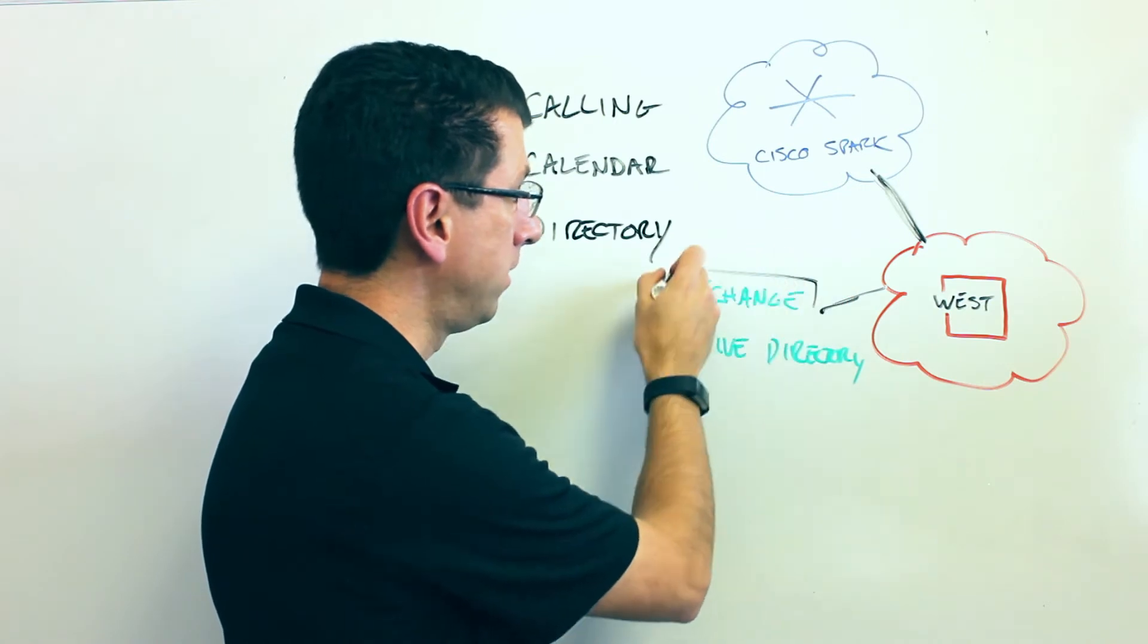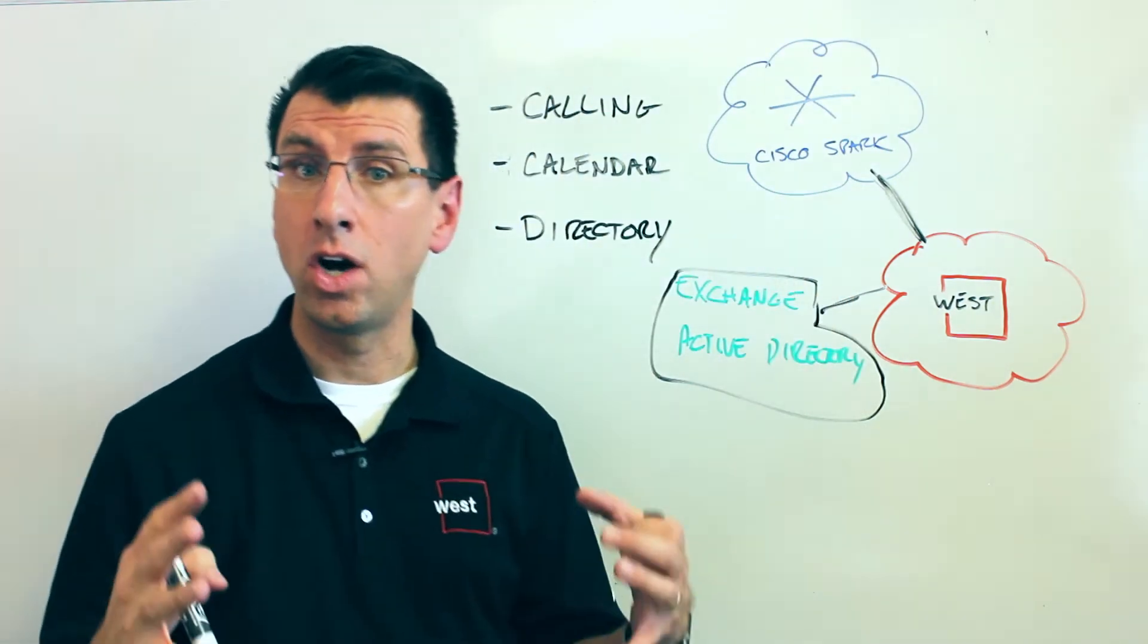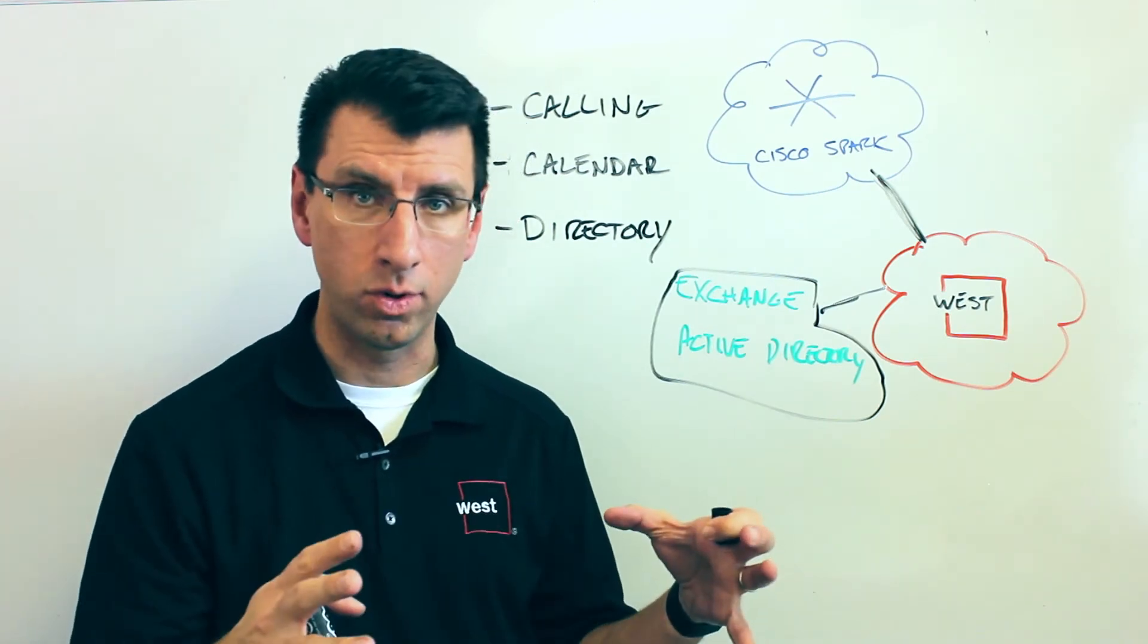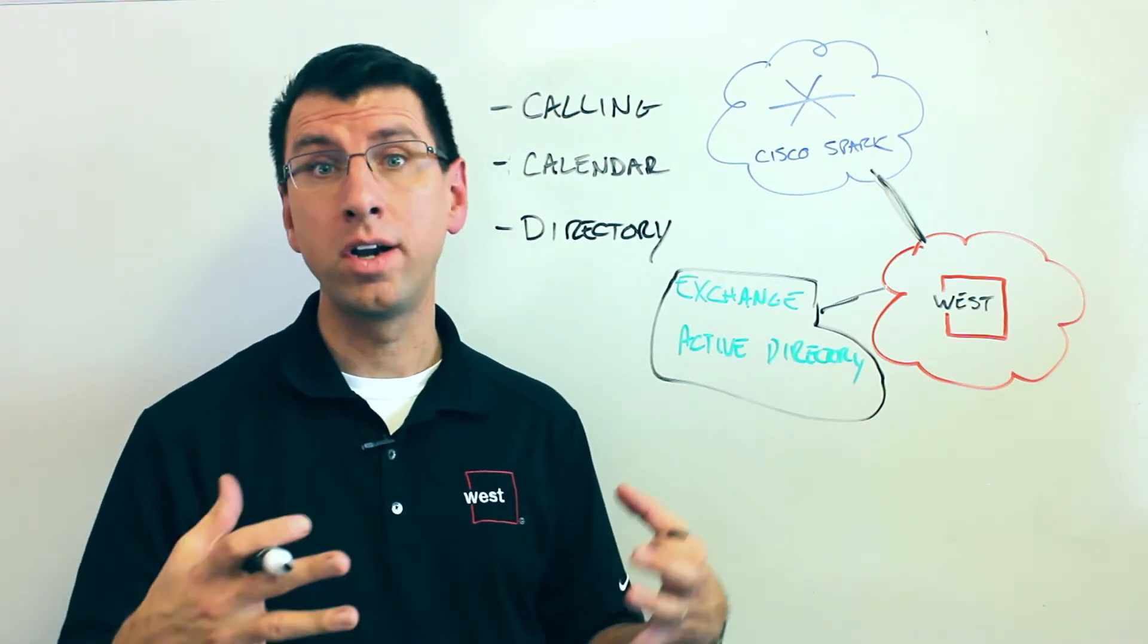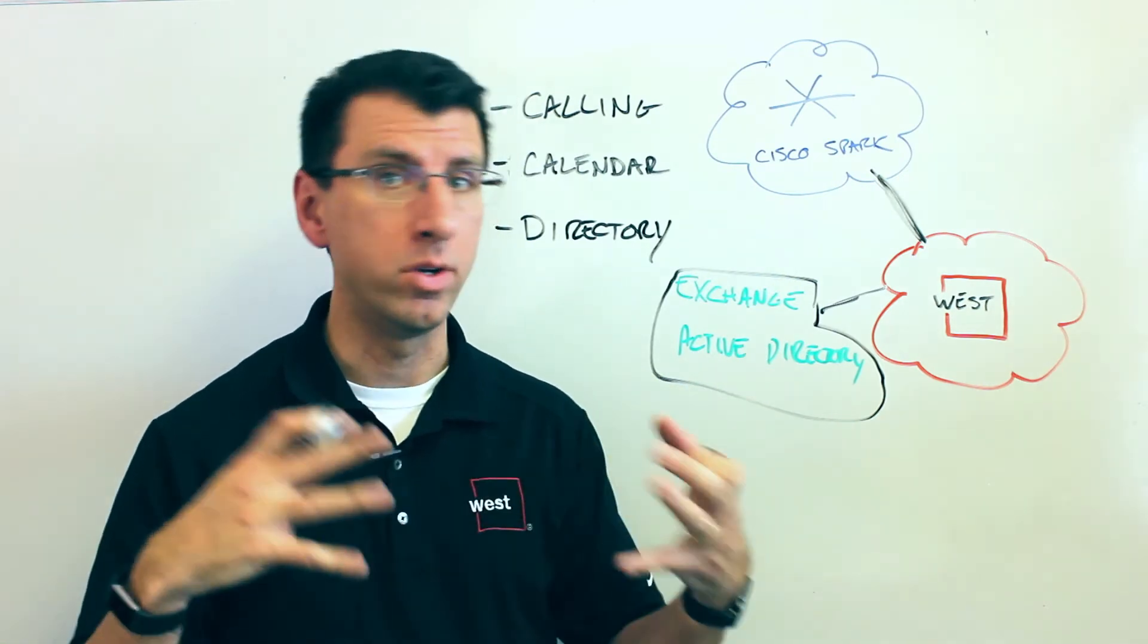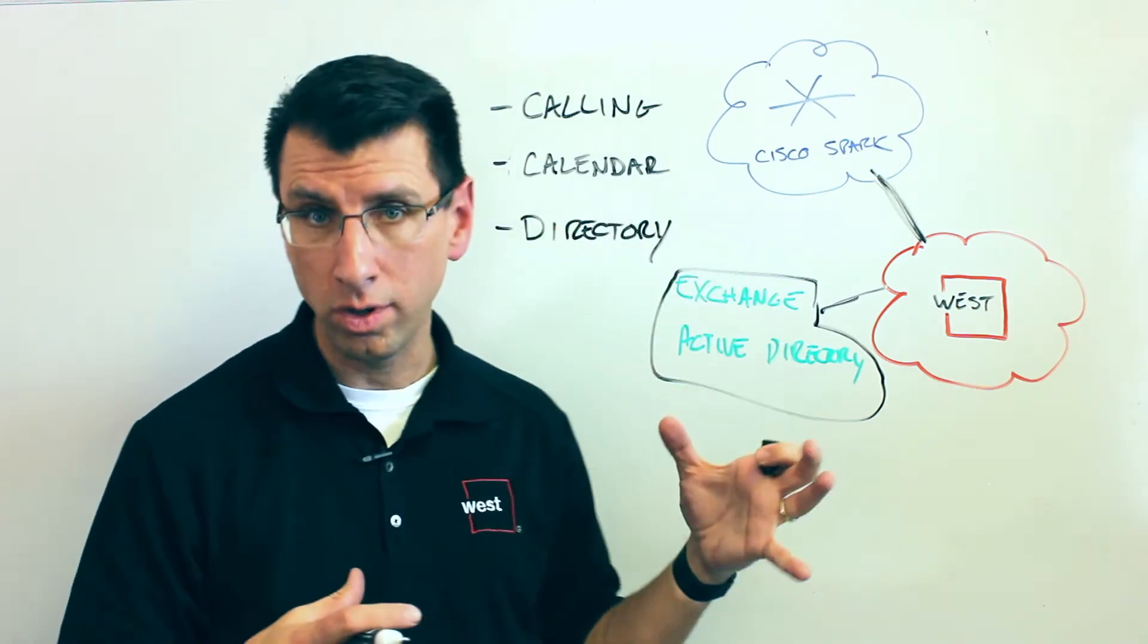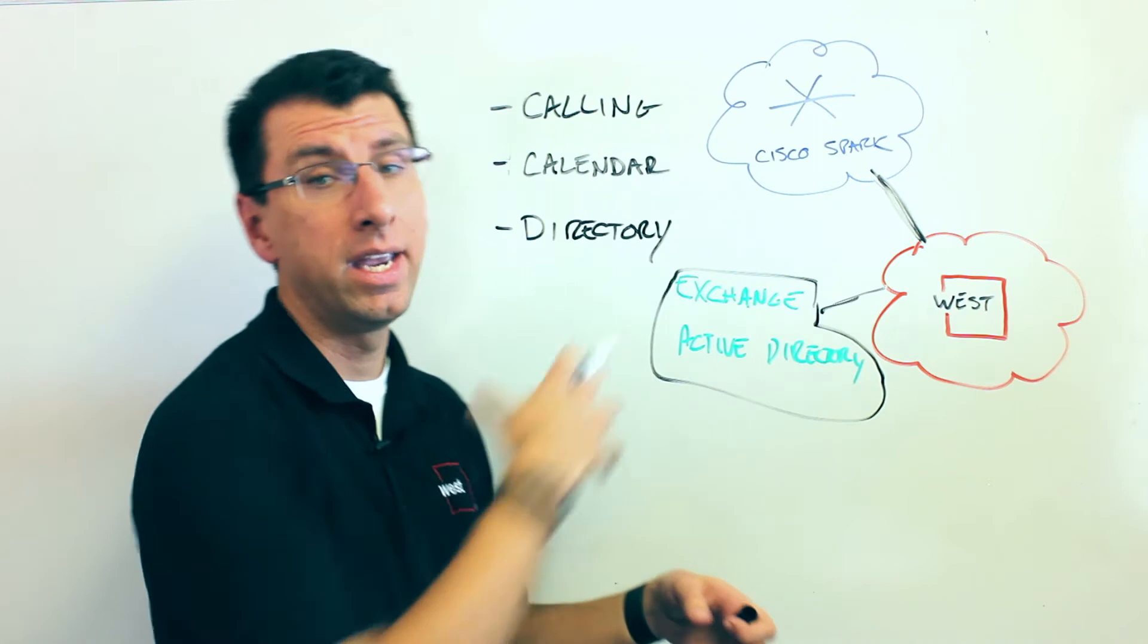When you connect to that, basically what you're enabling are three different scenarios. You're enabling calling, and specifically it's calling that's either call awareness or call control. So if a call comes into your desk phone, Spark is aware that that call is going on and your room, or your space with that person, becomes active and you can start doing meetings and sharing content. It also has the call control capability so you can use Spark actually as a softphone and start making and receiving calls.